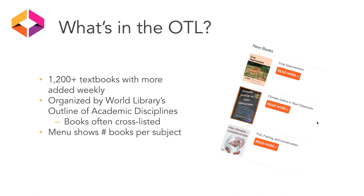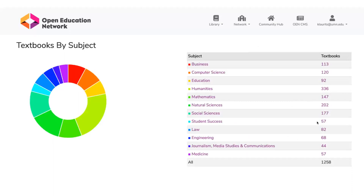There are currently more than 1,200 textbooks in the library, and typically we're adding new books on a weekly basis. The subjects are organized by the World Library's Outline of Academic Disciplines. Books can be cross-listed in multiple disciplines, and the menu shows the number of books per subject area. If you have access to the Community Hub, you can also see a colorful chart which gives you the number of books in a particular subject area as well.